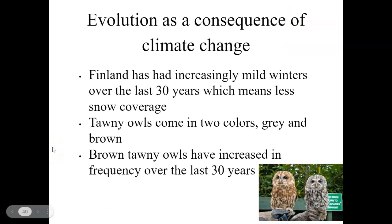Climate change is also driving evolution. In Finland, increasingly mild winters over the last 30 years mean less snow coverage. The tawny owl comes in two colors — light brown and gray. The gray coloration previously blended in well with snow, but with less snow it is no longer advantageous. The brown owls now have a higher chance of survival, pass on genes for brown coloration to their offspring, and over the last 30 years the frequency of brown tawny owls has increased.